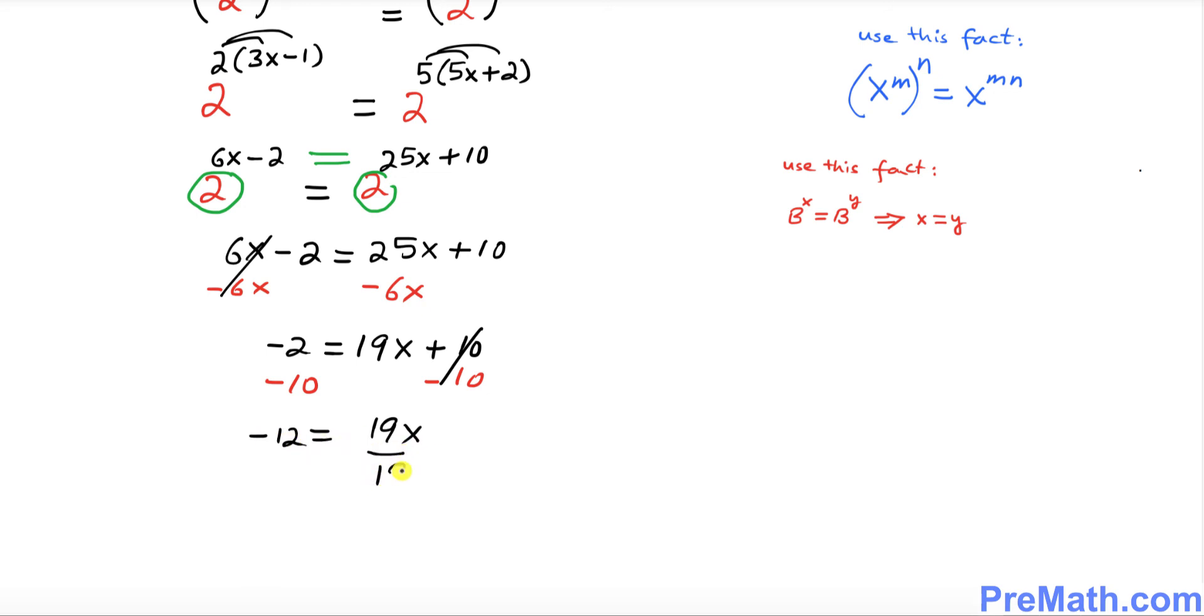Divide both sides by 19, so x equals negative 12 over 19 as our solution.